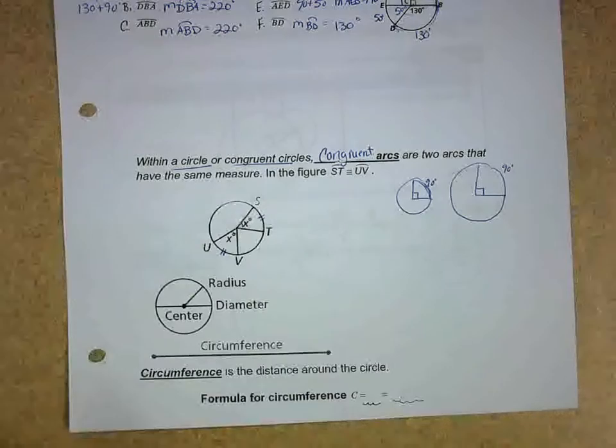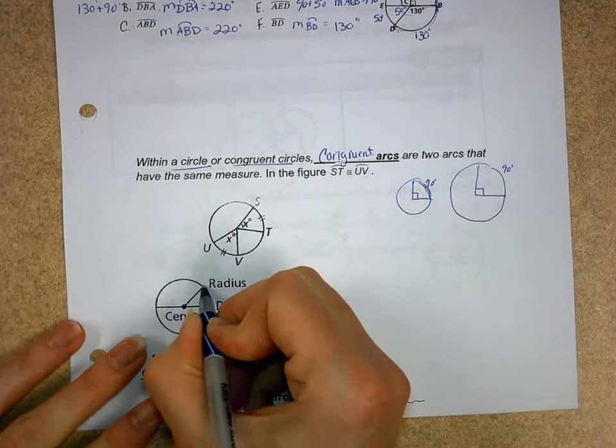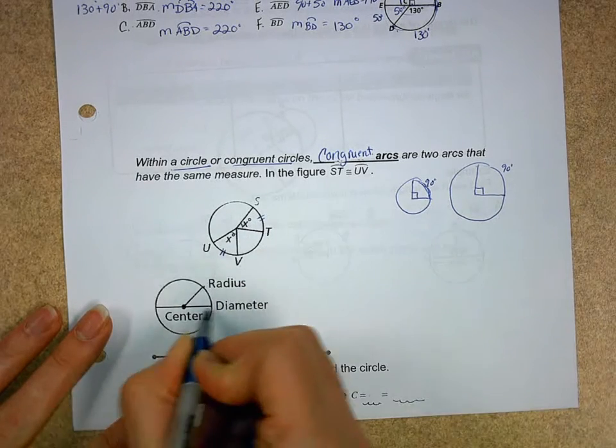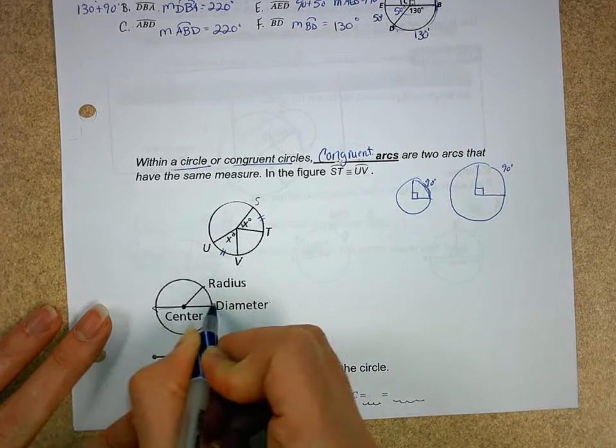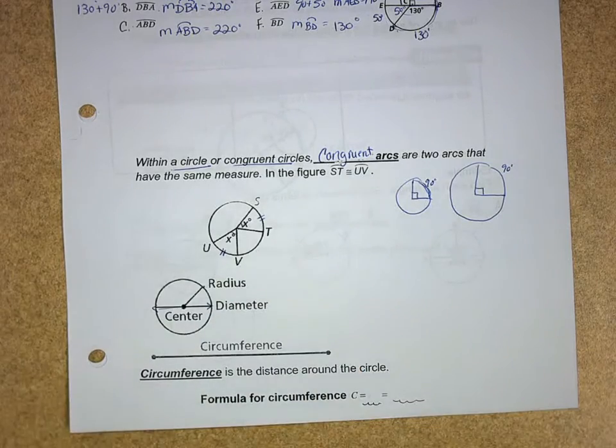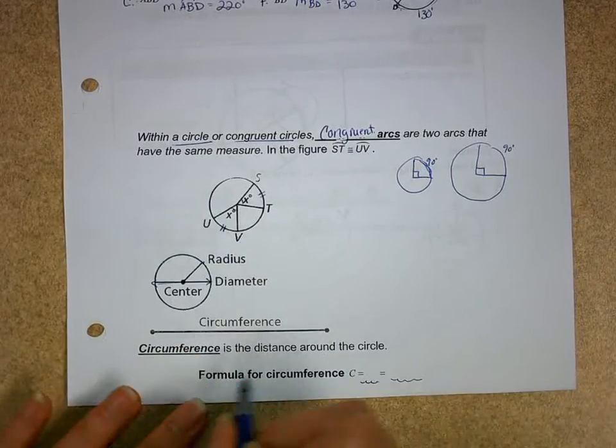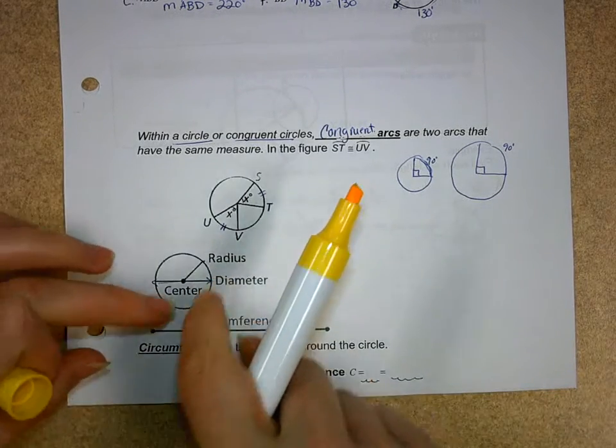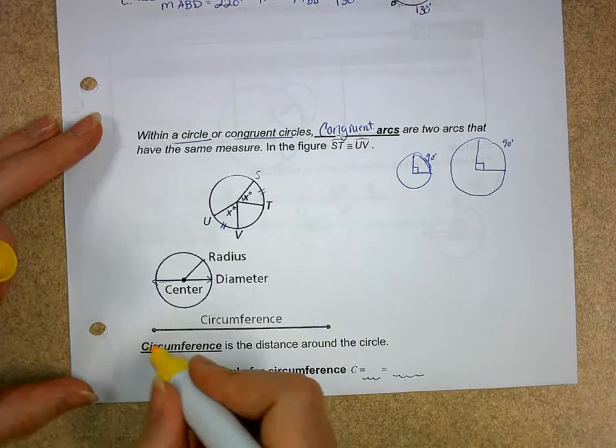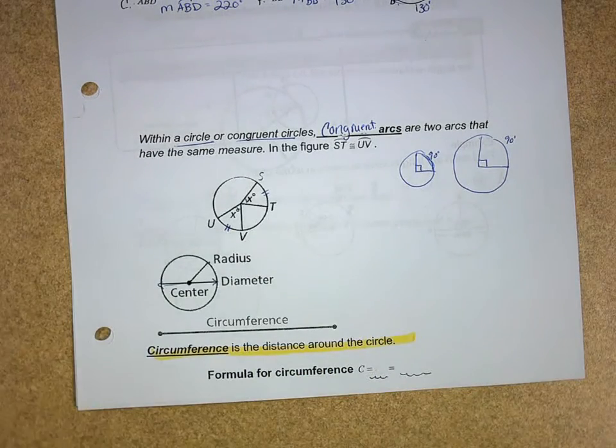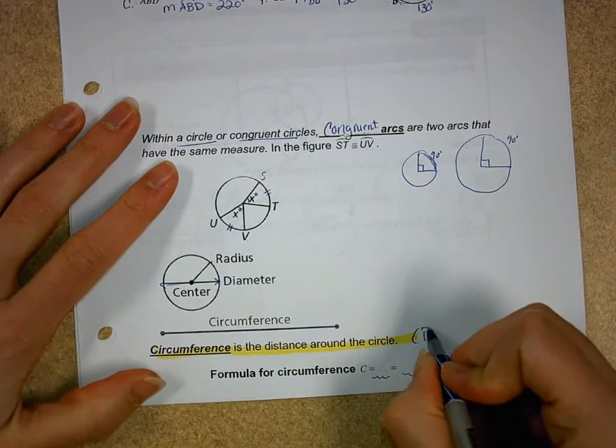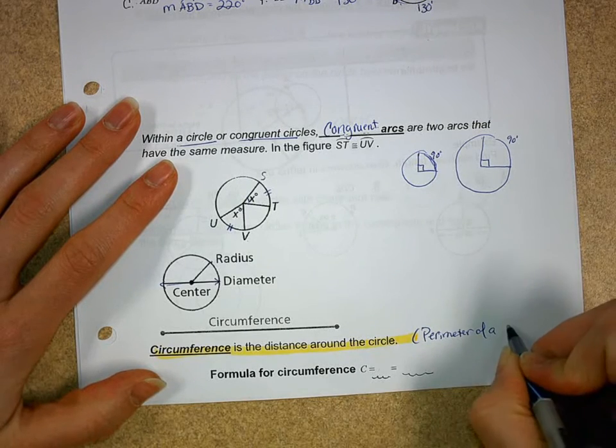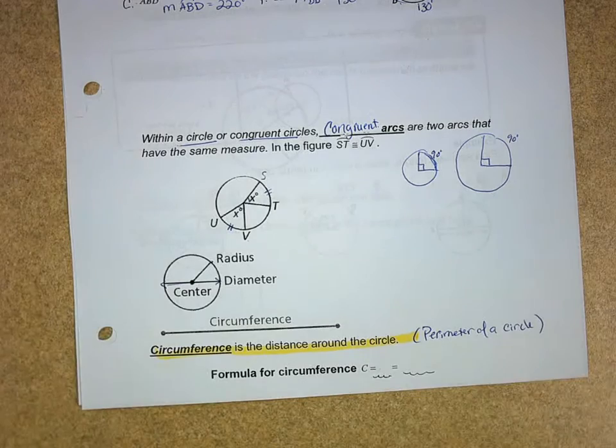Just some other refresher things you need to remember. Our radius goes from the center to a point on the circle. Our diameter is all the way through, right? Our center is in the middle. What's circumference? Circumference is just the distance around. And they're showing like if I was to take a circle and unroll it, that's your circumference. Another thing you just need to remember, it's the perimeter of a circle. It's the distance around. It's kind of just the terminology we use for it.